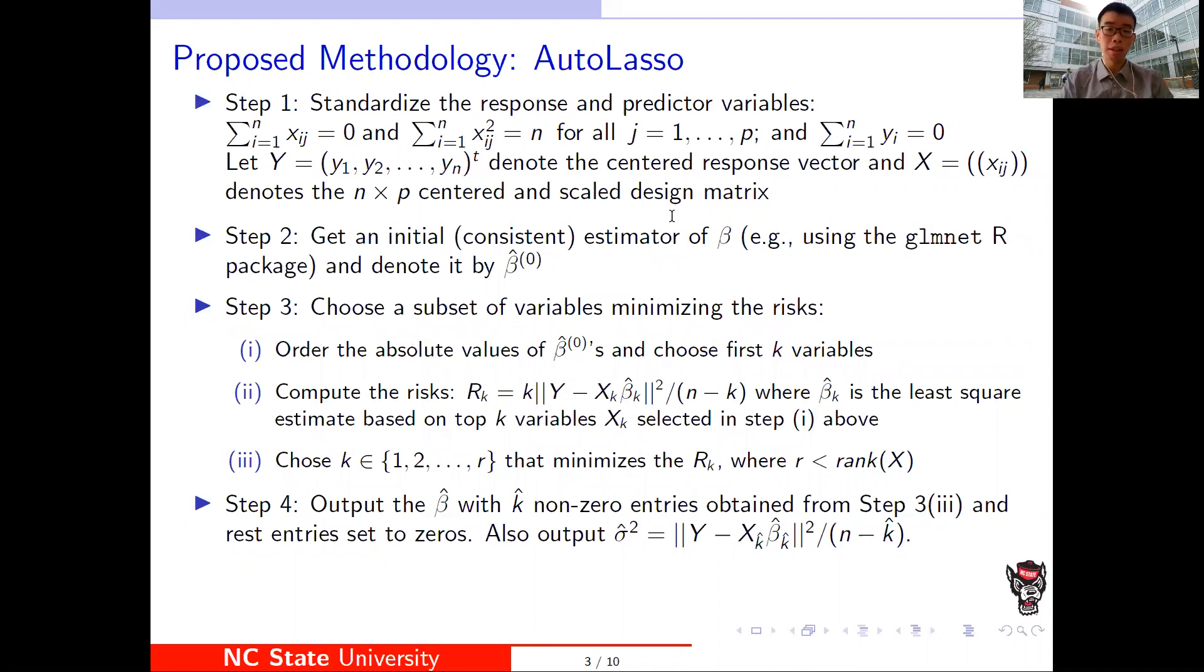Our methodology is: first, standardize the response and predictor variables. Then get an initial estimator of beta. Then we choose a subset of variables minimizing the risks. And at the final step, we output the estimated beta hat and the variance.